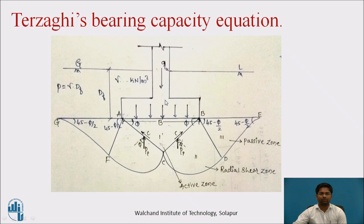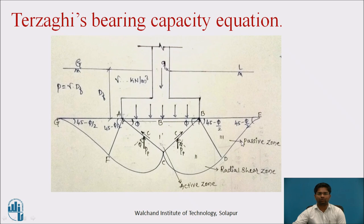It is a footing which is carrying the load qu. Ground condition is horizontal. Gamma, the unit weight of soil sample, gamma into df is nothing but overburden pressure. Therefore, P equal to gamma into df at the base of footing. We are dividing the entire zone into three components: one is active zone, second one radial shear zone, and third one passive zone. In the active zone, soil is in limit equilibrium state. Due to the overburden pressure, there is an induced passive zone. Due to the presence of the passive zone as well as the active zone, there may be chances of inducing a radial shear zone, which we are calling zone number 2.